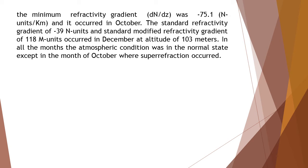The standard refractivity gradient of minus 39 N-units/km and standard modified refractivity gradient of 118 N-units occurred in December at an altitude of 103 meters. In all months, the atmospheric condition was in the normal state, except in the month of October where super-refraction occurred.